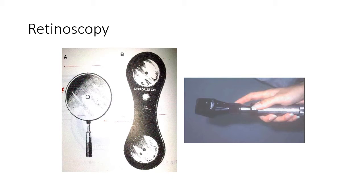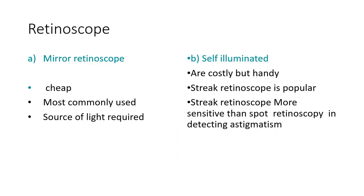For the plane mirror retinoscope, you require a light source for illumination of the patient's retina. The mirror retinoscope is cheap and commonly used but requires an external light source. Self-illuminated retinoscopes are costly but handy. The streak retinoscope is popular and more sensitive than spot retinoscopy in detecting astigmatism.